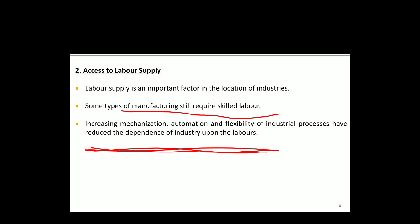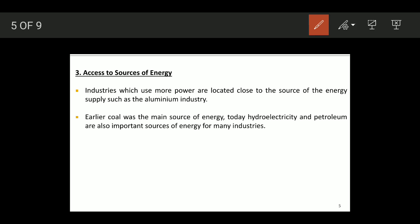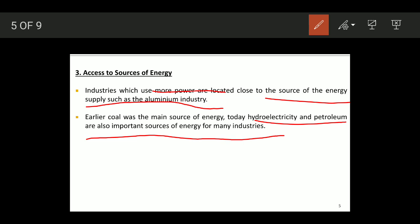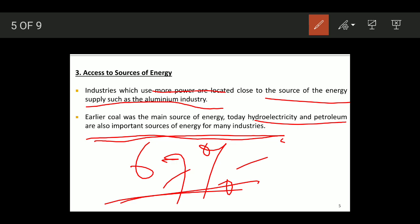The third geographical factor is access to source of energy. Industries which use more power are located close to the source of energy supply, such as the aluminum industry. Earlier, coal was the main source of energy, but today hydro-electricity and petroleum are also important sources of energy for many industries.